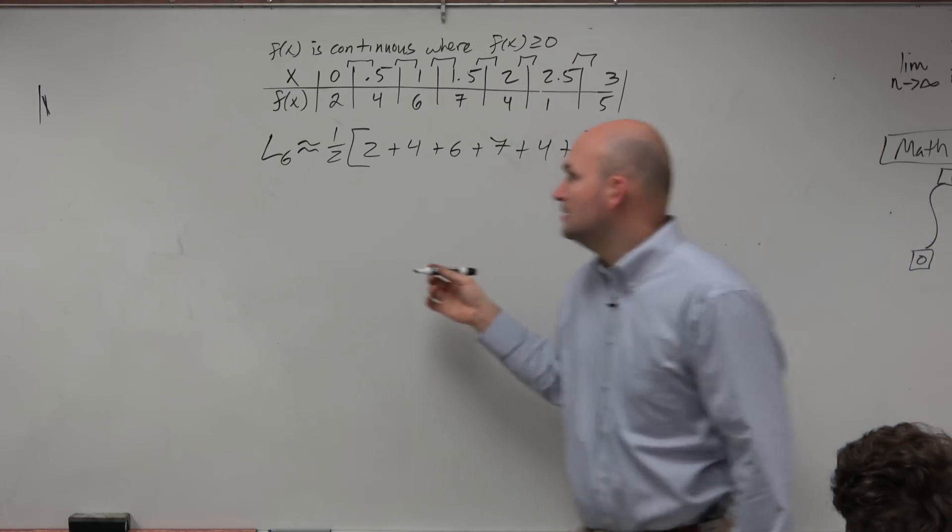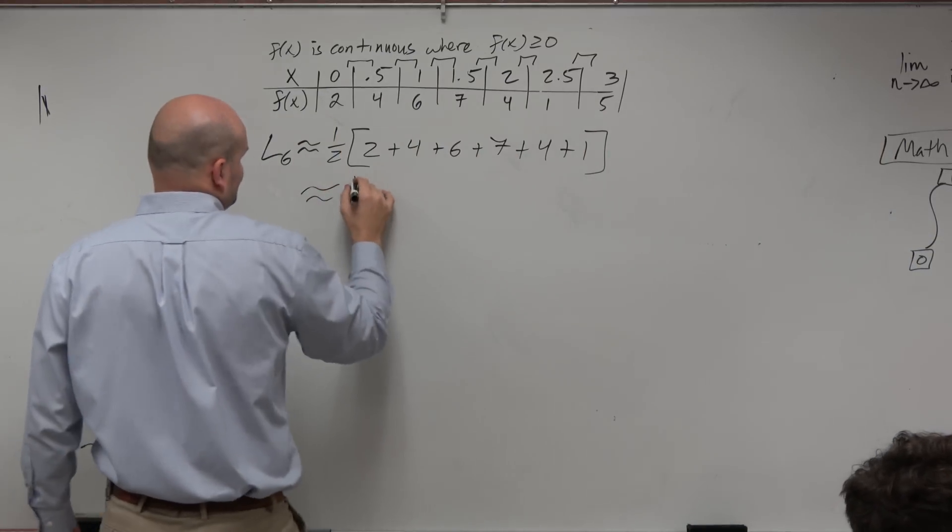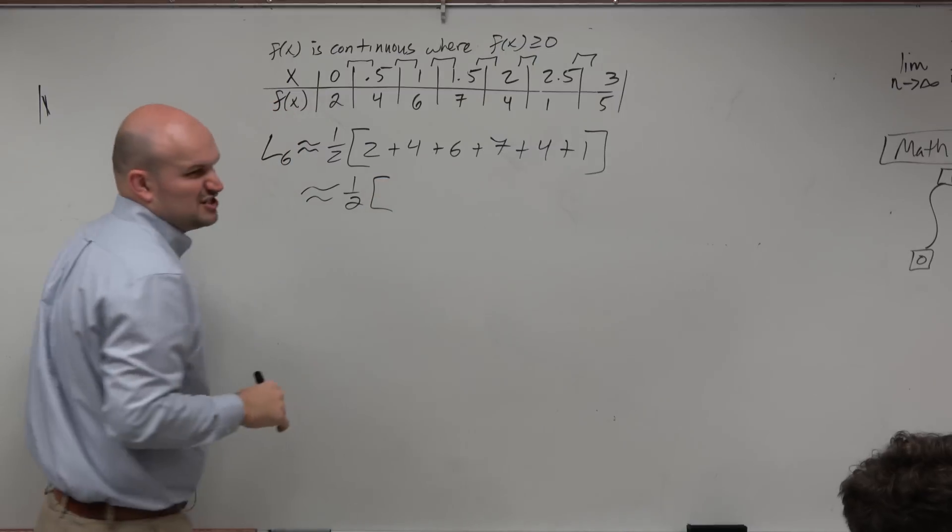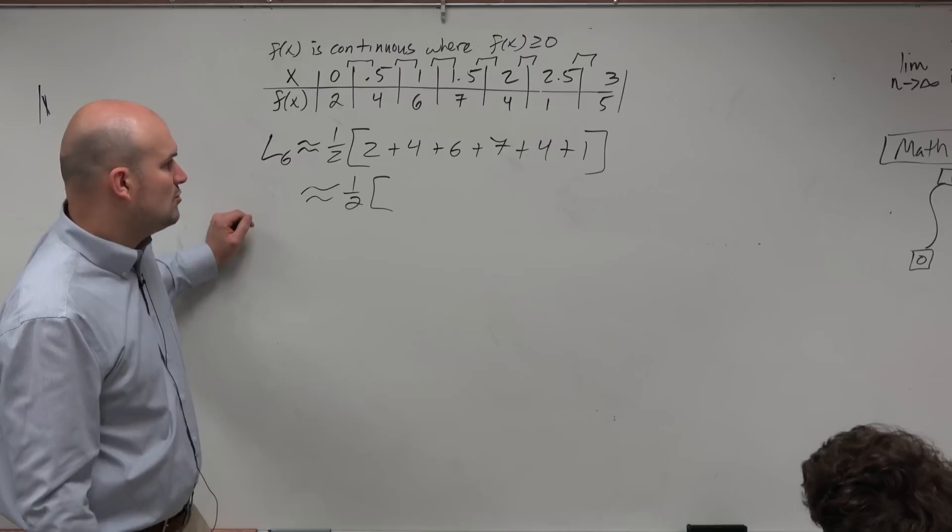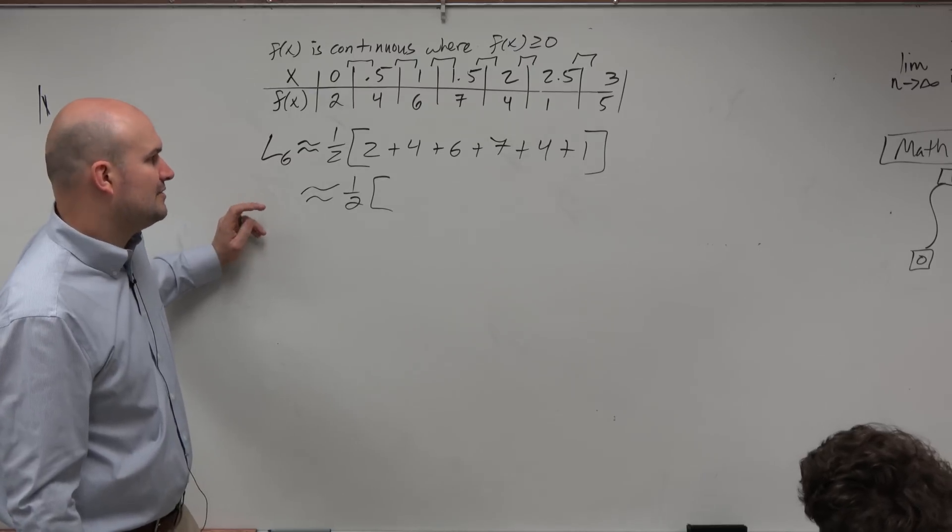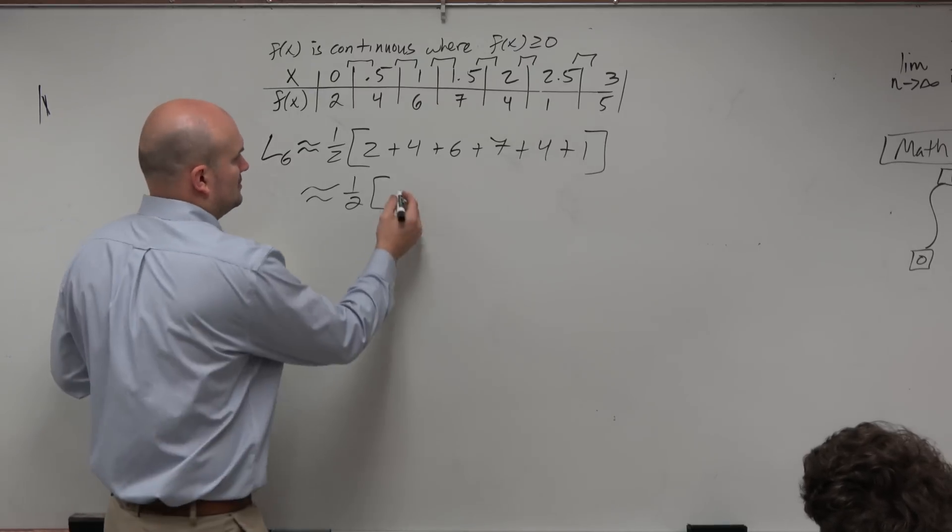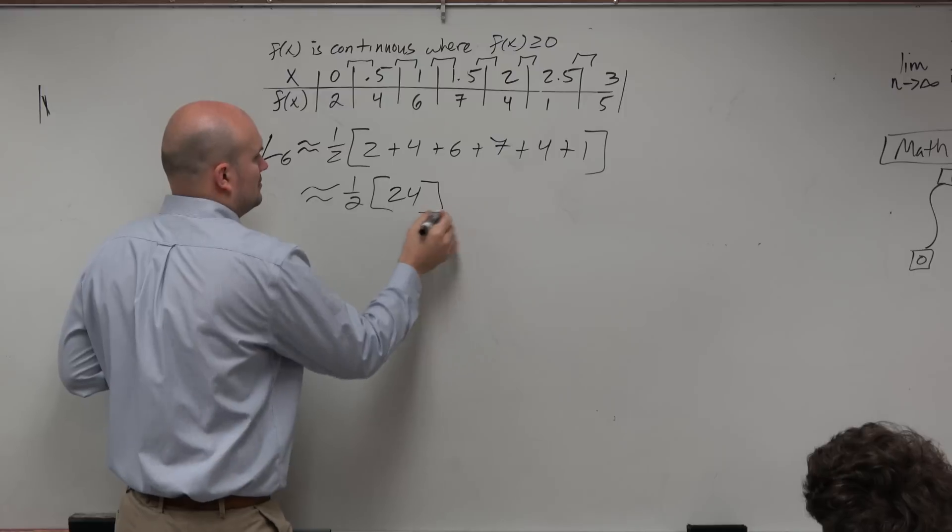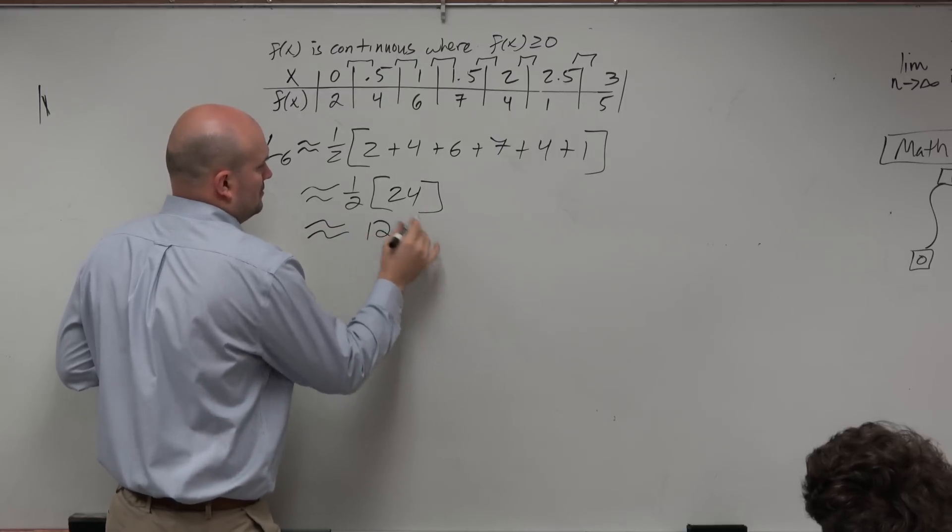And again, do we have six intervals here? Yes. So now we can just approximate this. This actually isn't that bad. 5, 6, 12, 19, 23, 24, 12.